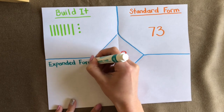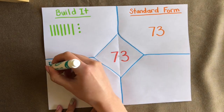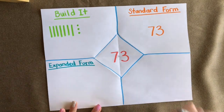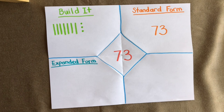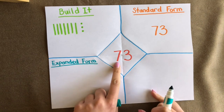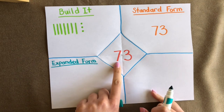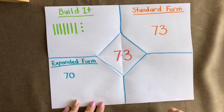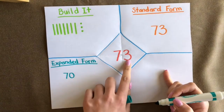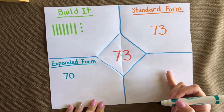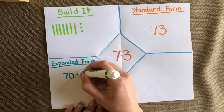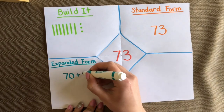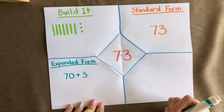Now let's do expanded form. Expanded form is when you pull those digits apart and write down the value of each digit. A seven in the tens place is actually 70, and a three in the ones place has a value of just three. So the expanded form of 73 is 70 plus 3.